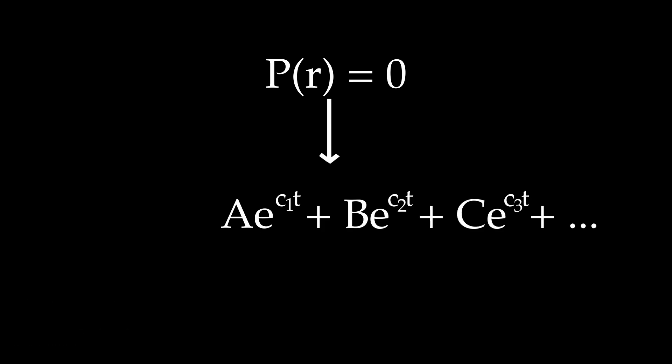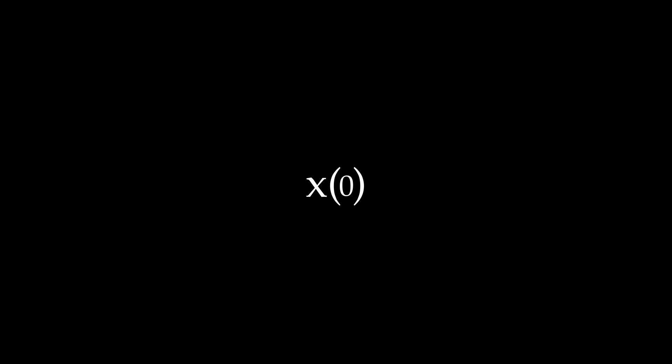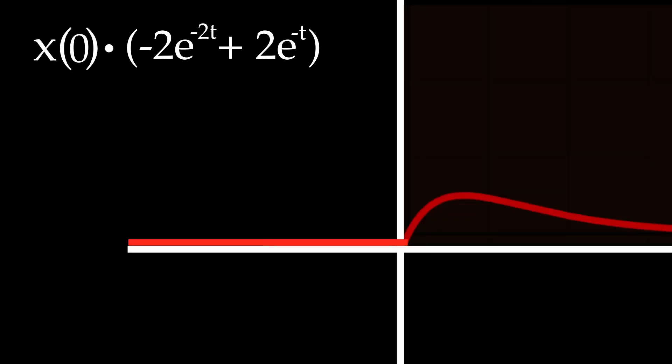So now for the input of x of t. For x of 0, we can just get the response of the delta function, and then multiply the output by x of 0. We can do this because by linearity, if we scale the input, we scale the output.